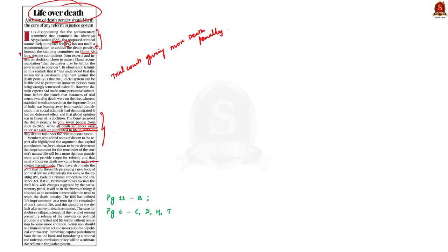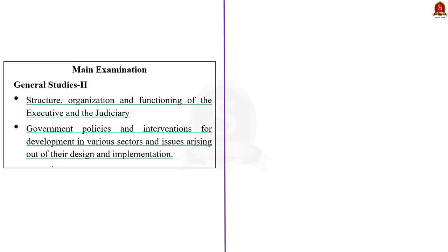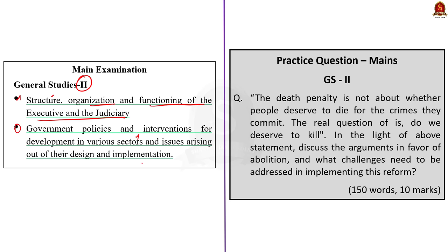We will approach this topic in our usual answer-writing cum interactive approach. Before entering the discussion, let us look at the syllabus. This topic comes under General Studies Paper 2 under structure, organization and functioning of executive and judiciary, and government policies and interventions for development in various sectors. The question has a statement: 'The death penalty is not about whether people deserve to die for the crimes they commit. The real question is, do we deserve to kill them?' Discuss the arguments in favor of the abolition of the death penalty and what challenges need to be addressed in implementing this reform.